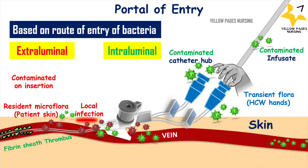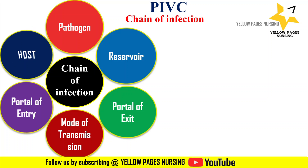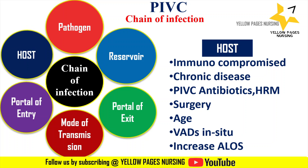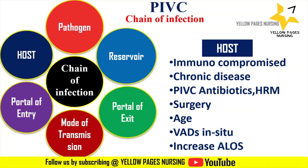Vascular access device infection also includes colonization from contaminated infusion solutions and hematogenous spread of microorganisms from a distant site of infection. In the chain of infection, next comes the host. The host includes immunocompromised patients, patients with chronic diseases, peripheral intravascular catheter use, antibiotics, high-risk medications, surgery, old age, vascular access devices in situ, and increased average length of stay.